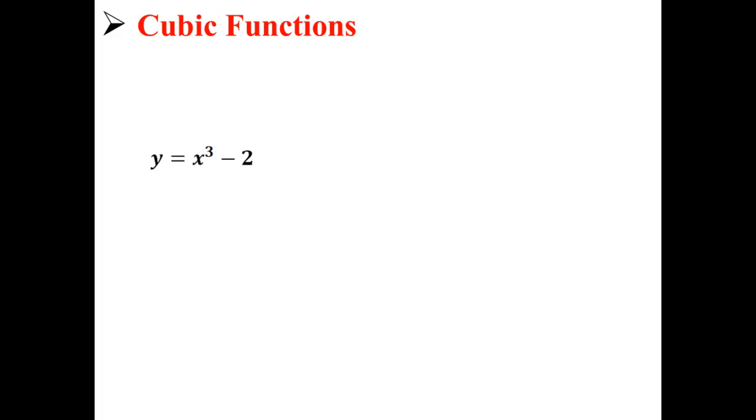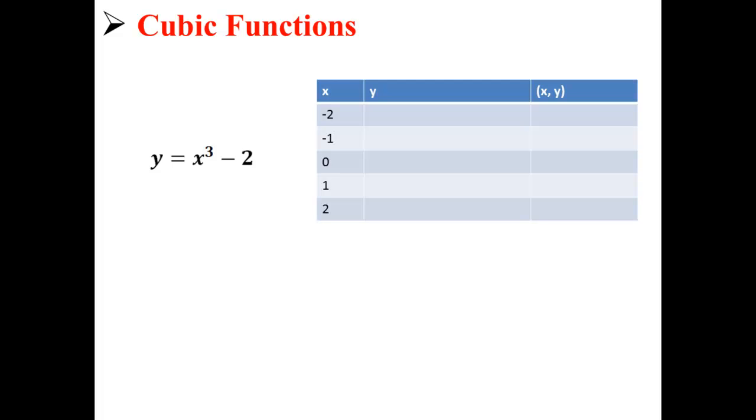We're going to create a table of x values, then plug them into the equation to get our y values. Then we'll have ordered pairs that we can graph. Let's start with -2: negative 2 to the third power minus 2 equals -10, so our first point is (-2, -10).